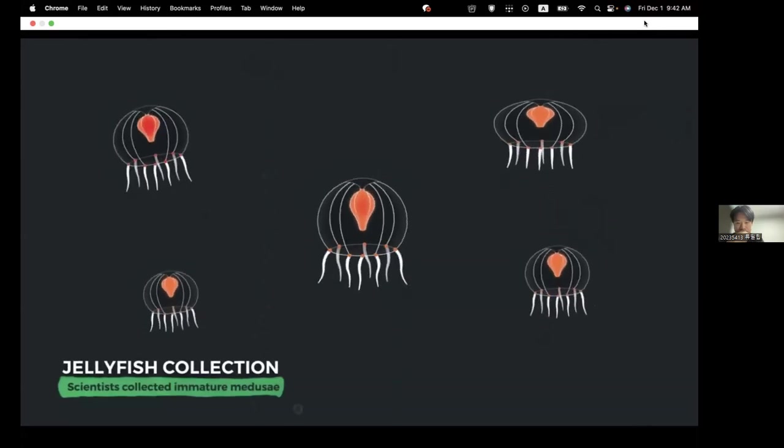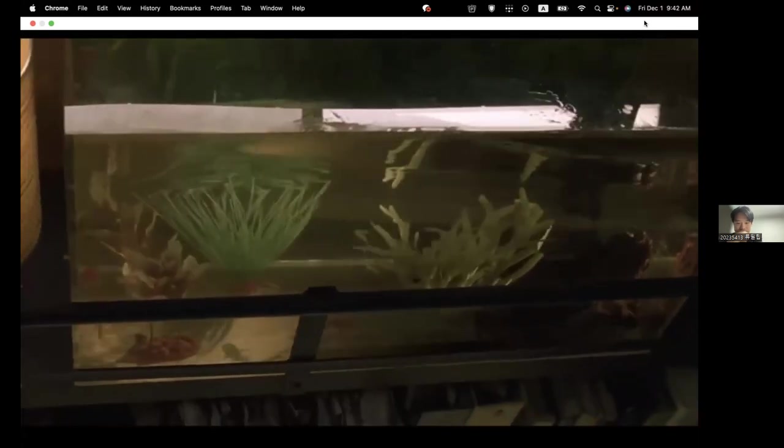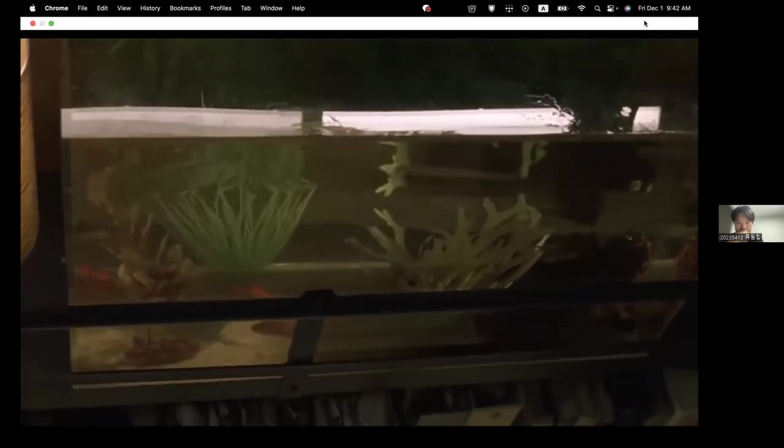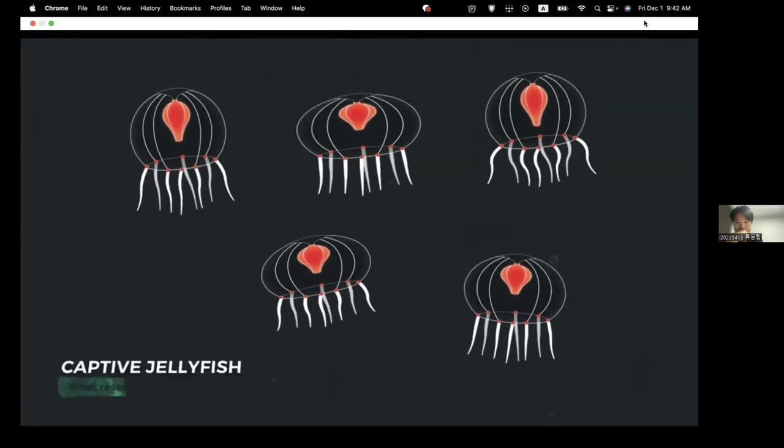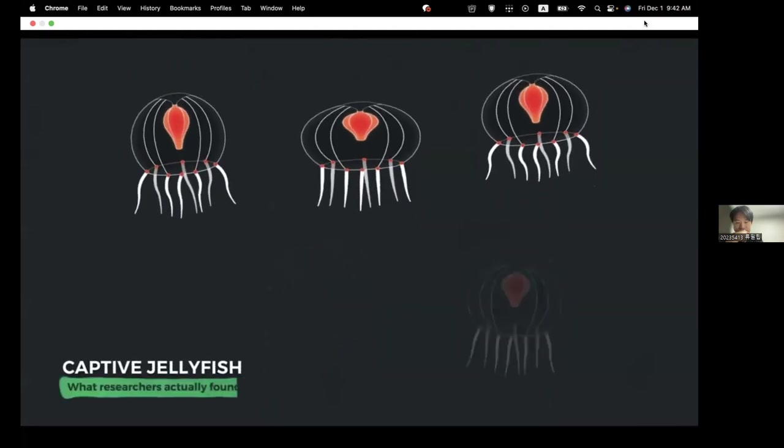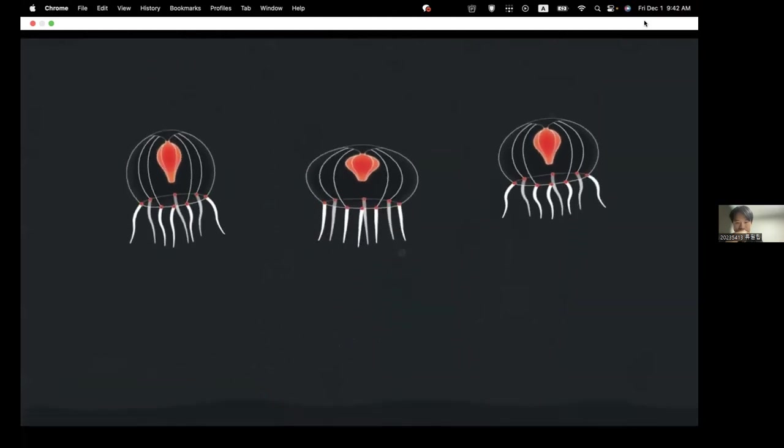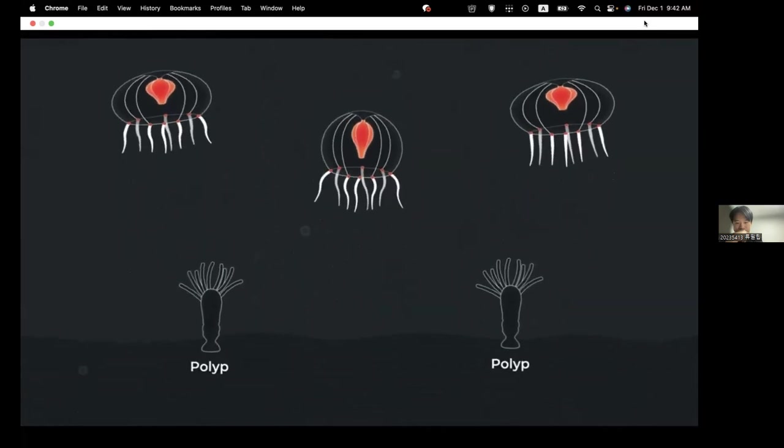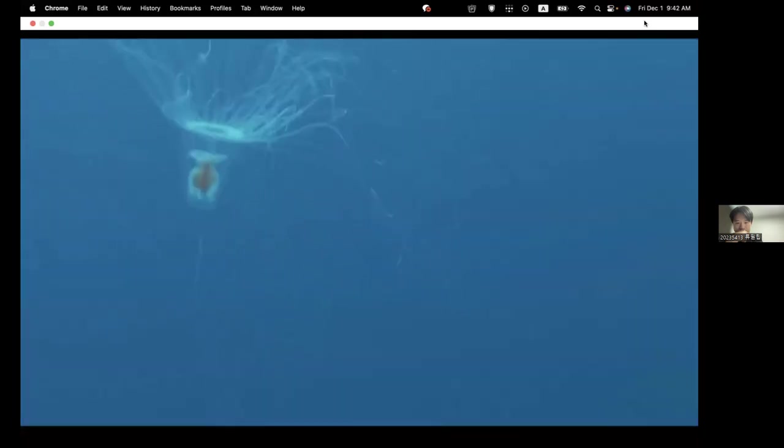But the immortal jellyfish on the right has a blue path which makes itself smaller and become younger to grow up again. It's not actually reproduction, but it makes itself younger by the process. Lots of scientists are researching this mechanism, which might be applied to other animals and eventually to humans.